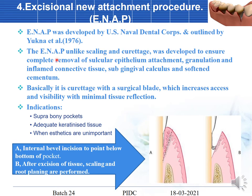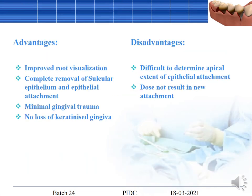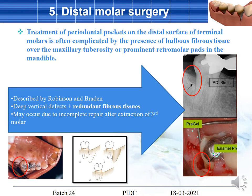The next procedure was developed by the U.S. Naval Dental Corps and outlined by Yukna. Unlike scaling and curettage, it was developed to ensure complete removal of the junctional epithelial attachment, granulation and inflamed connective tissue, subgingival calculus, and softened cementum. Basically it is curettage with a surgical blade, increasing access and visibility with minimal tissue reflection — a closed procedure. Indicated for supra-bony pockets with adequate keratinized tissue where aesthetics are important. Disadvantages include difficulty determining the apical extent of the epithelial attachment and failure to achieve new attachment.